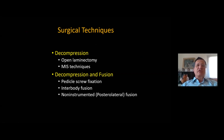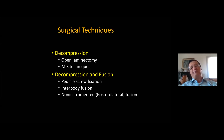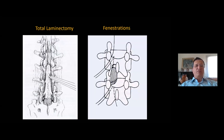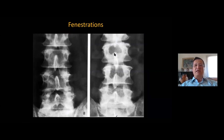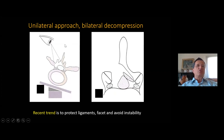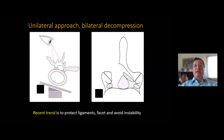If we come to the surgical techniques, there are mainly decompression or decompression plus fusion surgeries. In the past we were just doing total laminectomies. Then we switched to fenestrations by bilateral muscle screening. This is a typical case of three-level fenestrations. Then we switched to unilateral approach and bilateral decompressions. The recent trend is to protect ligaments and facet joints so we can avoid instability.